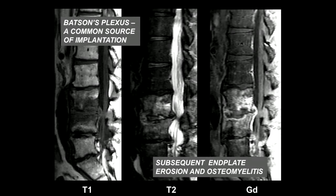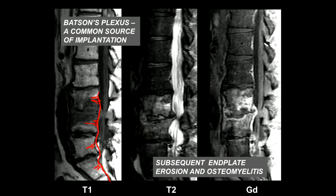That's an arterial method of transmission. You can also get venous transmission to the spine, and that's usually related to Batson's plexus. This is a common source of implantation, especially in patients with pelvic infections and tuberculous infections of the genitourinary system. Batson's plexus is a valveless drainage system of the pelvis and spine, and pelvic infections can transmit up to the spine through this venous plexus.